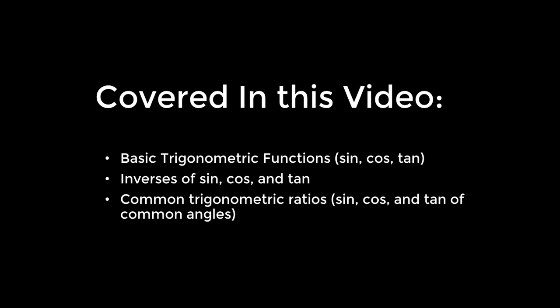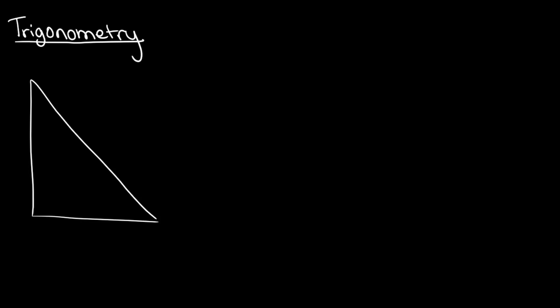In this video I will be going over the trigonometric ratios sine, cosine, and tangent, as well as some basic problems involving them, and also their inverses. When we are given a right angle triangle, we are hardly ever given every single angle and every single side. They'll usually give you one angle and one side, and you'll have to find the other angles and other sides. This creates an issue — how do we find the different sides and angles with only one side and one angle? This is where our trigonometric functions come in.